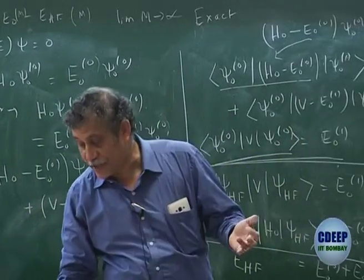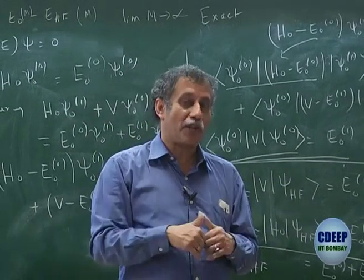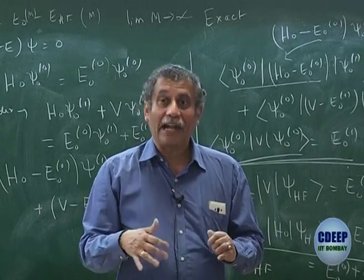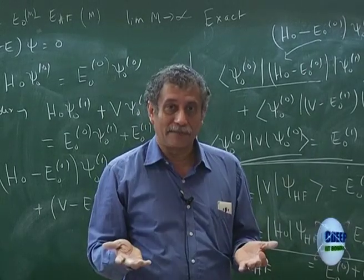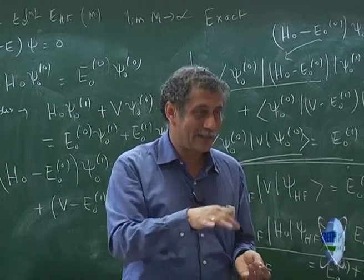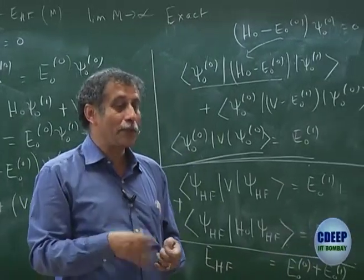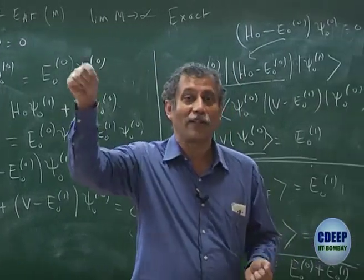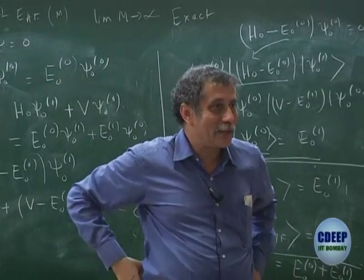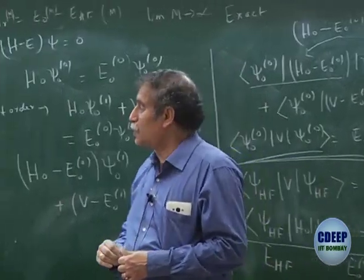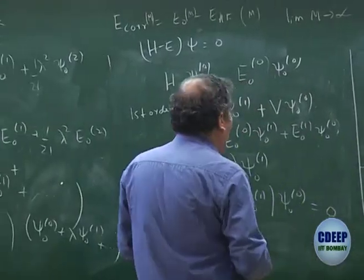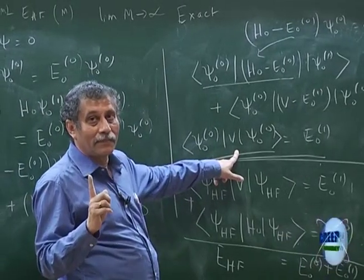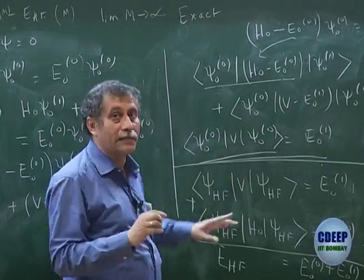The question is: can I have H₀ for which Hartree-Fock energy is the zeroth-order solution? In that case my correction would start from the first order. I will come back to that question. But I also have not written explicitly how V looks like — we will do that in the next class.